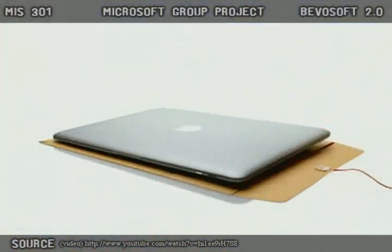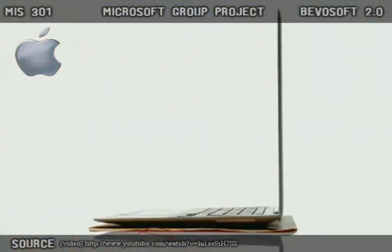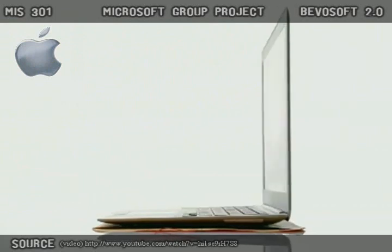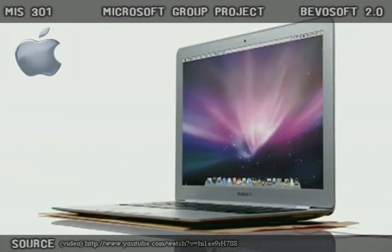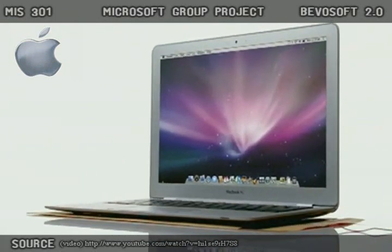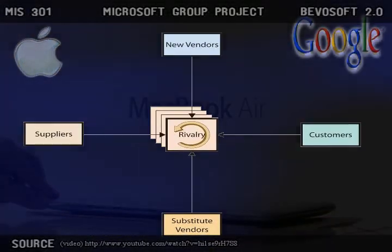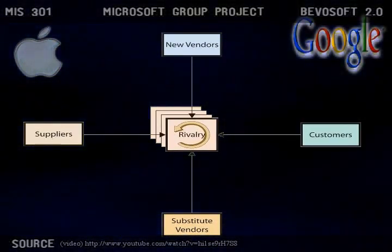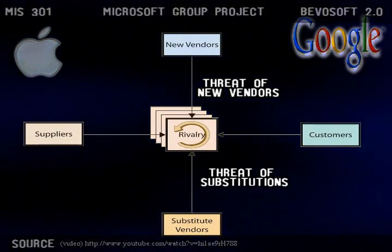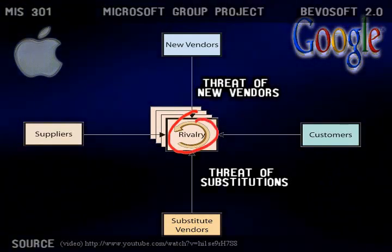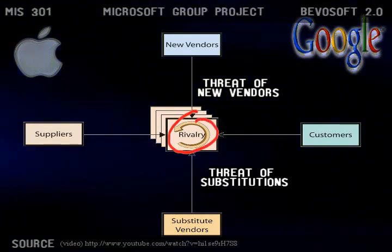Since 2005, companies as well as customers have created new challenges for Microsoft. These groups demonstrate Porter's model of five competitive forces. The competitive forces that can be applied here are the threat of new vendors, the threat of substitutions, and the rivalry among existing companies.